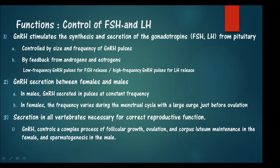GnRH stimulates the synthesis and secretion of FSH and LH, and this is controlled by the size and frequency of GnRH pulses. GnRH is released in pulses, not continuously — each kisspeptin signal triggers a GnRH pulse. It acts by feedback from androgens and estrogens. Low-frequency GnRH pulses favor FSH release, while high-frequency GnRH pulses favor LH release.